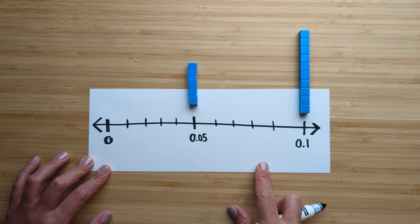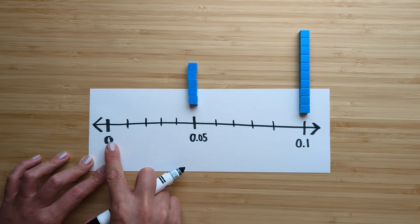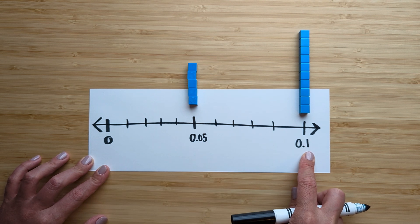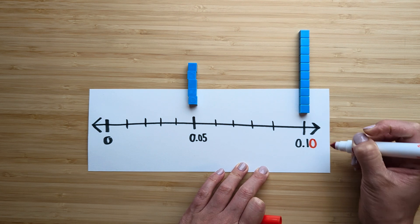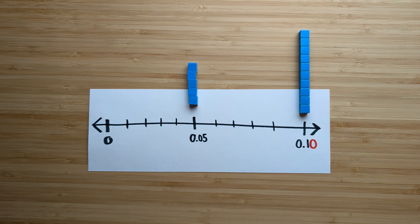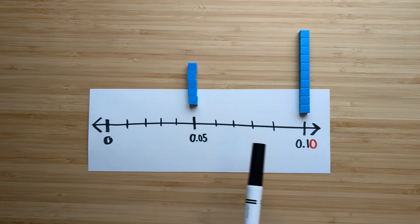Not exactly perfectly spaced, but okay. So if this is zero, five hundredths, one tenth, remember one tenth is also equal to ten hundredths. So now that should look a little bit easier, five hundredths, ten hundredths.